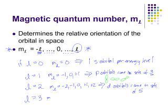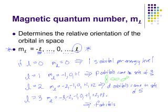If L equals 3, the M sub L values range from negative 3 through all integers up to positive 3, telling us that F orbitals come in sets of seven. This will be important when you do electron configurations. When you do all the calculations and spread these things out, you can actually see how they're oriented in space.